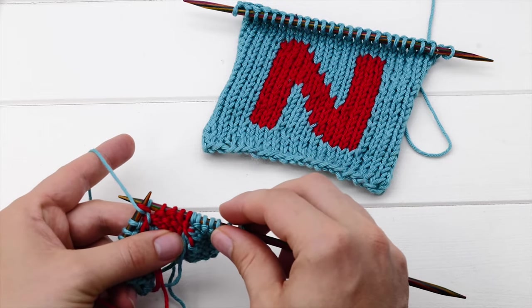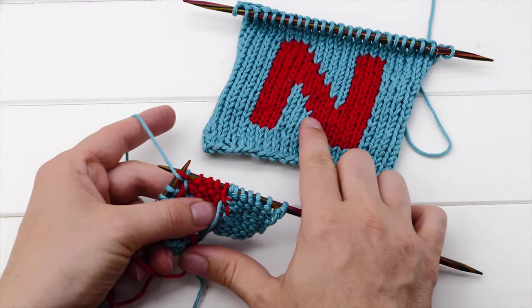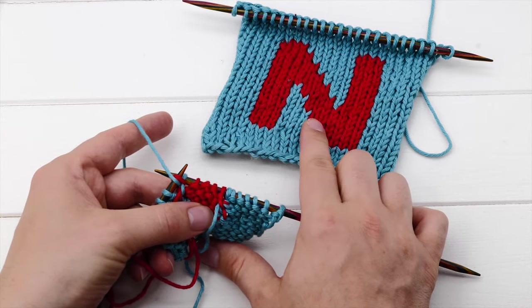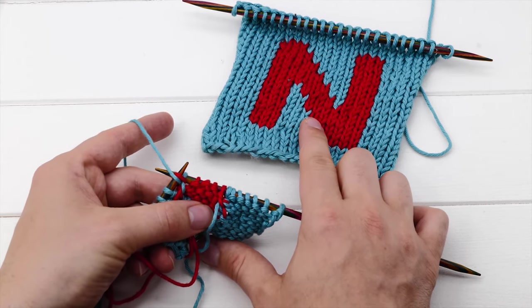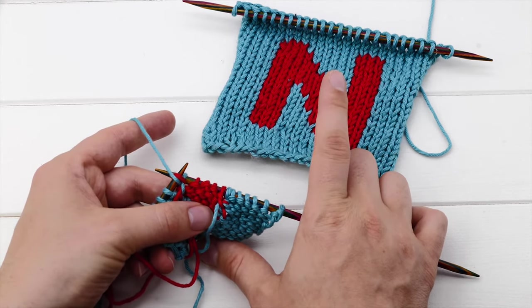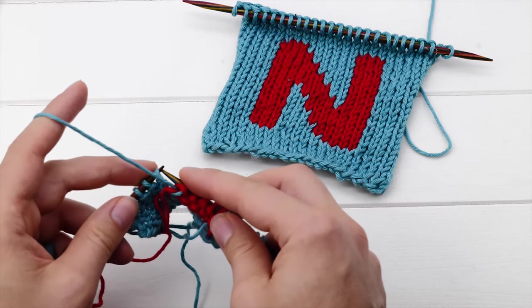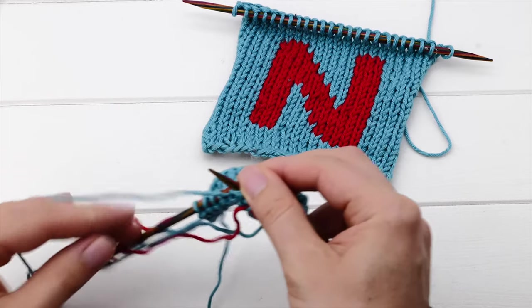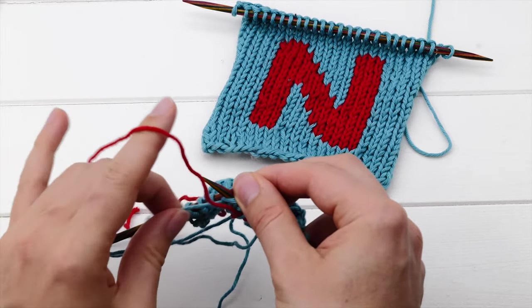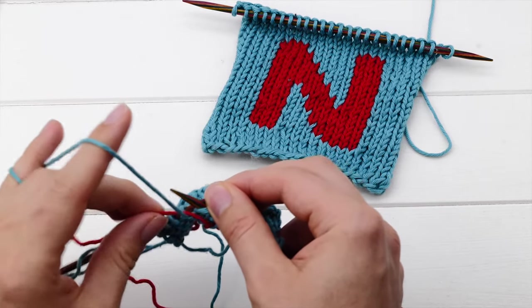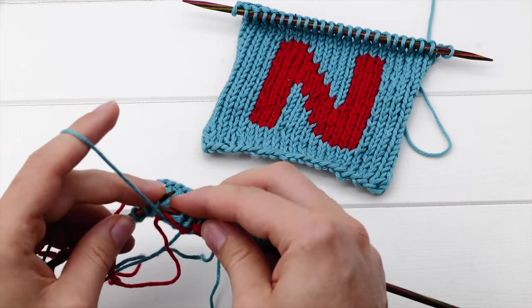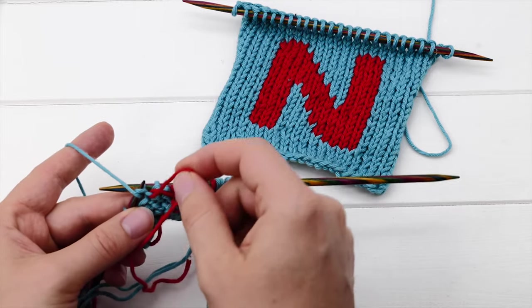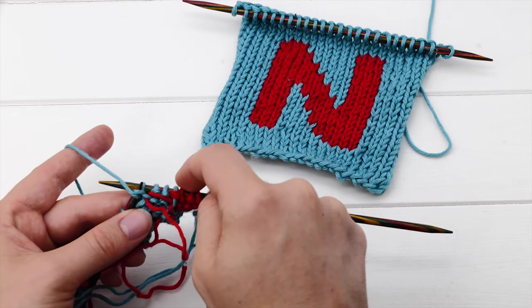The only thing you should know is that whenever you bridge more than one stitch, two, three, or four, then you will have to create floats in between like in Fair Isle. So you would have to trap the yarn like this on the back side. And when you return, then you can pick it up again and start from here.